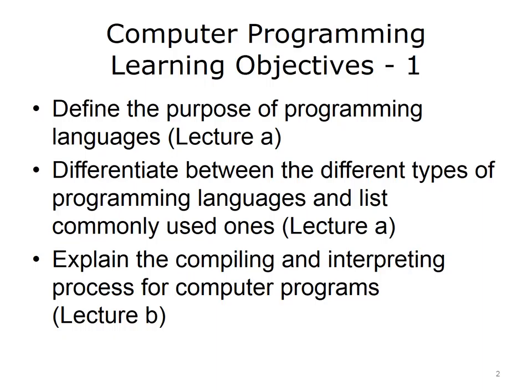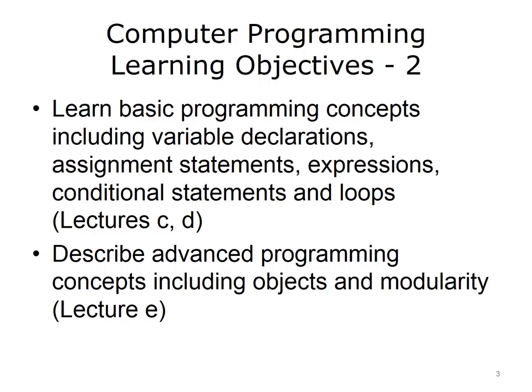The learning objectives for this unit, Computer Programming, are to: define the purpose of programming languages; differentiate between the different types of programming languages and list commonly used ones; explain the compiling and interpreting process for computer programs; learn basic programming concepts including variable declarations, assignment statements, expressions, conditional statements and loops; and describe advanced programming concepts including objects and modularity.